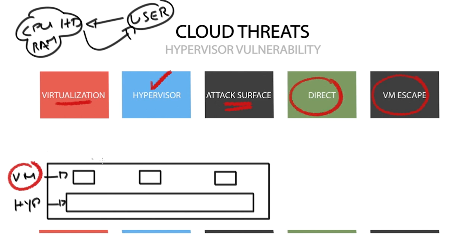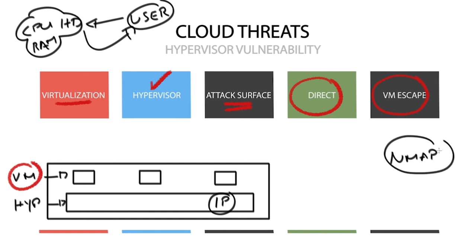As the hypervisor is reachable by an IP address, traditional network enumeration tools such as Nmap can be used to directly attack the hypervisor. For example, Nmap can be used to scan a subnet and return results of live hosts, services, and open ports.